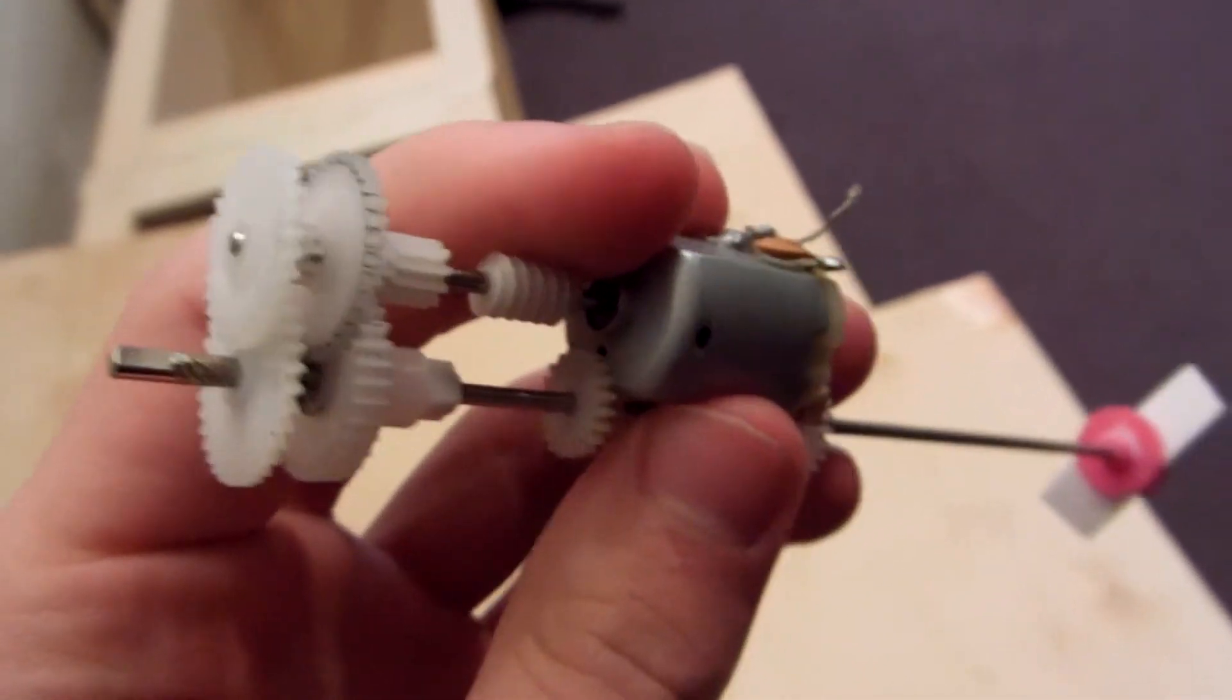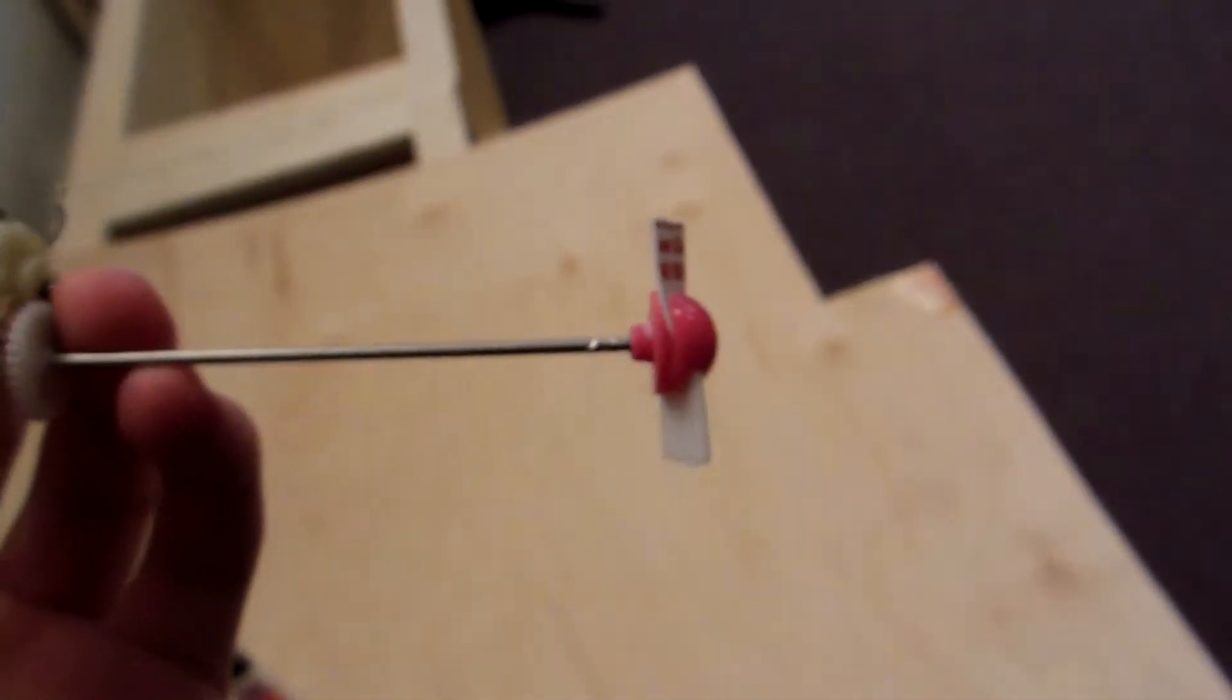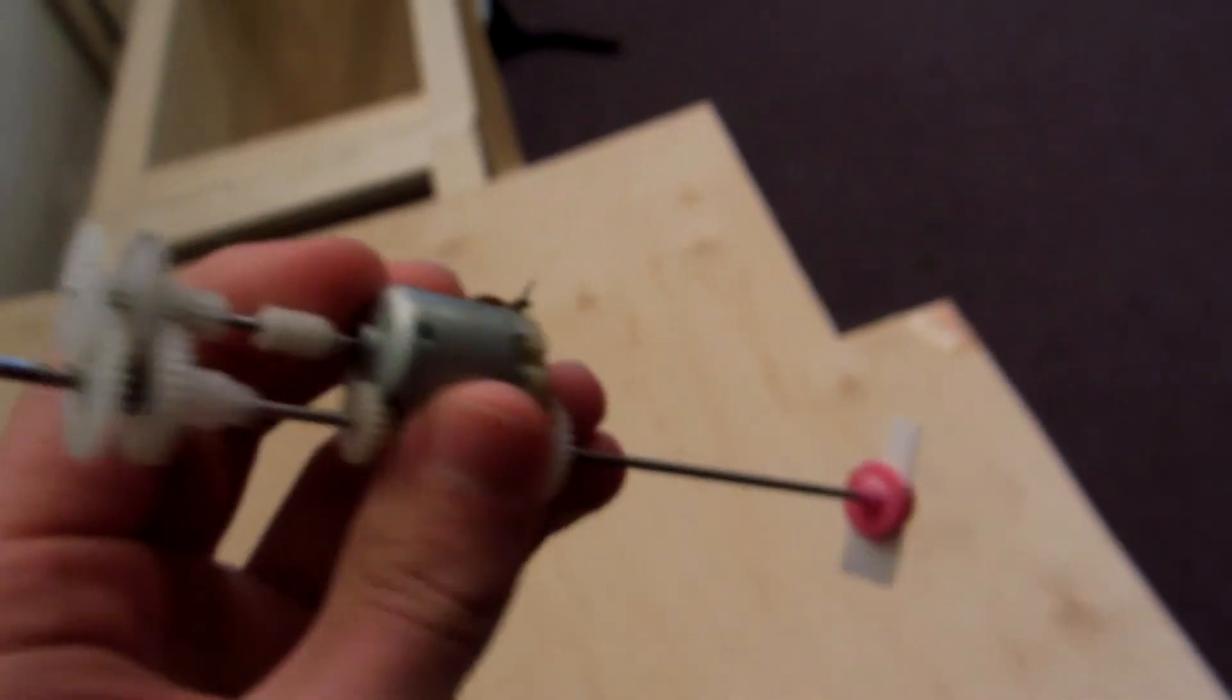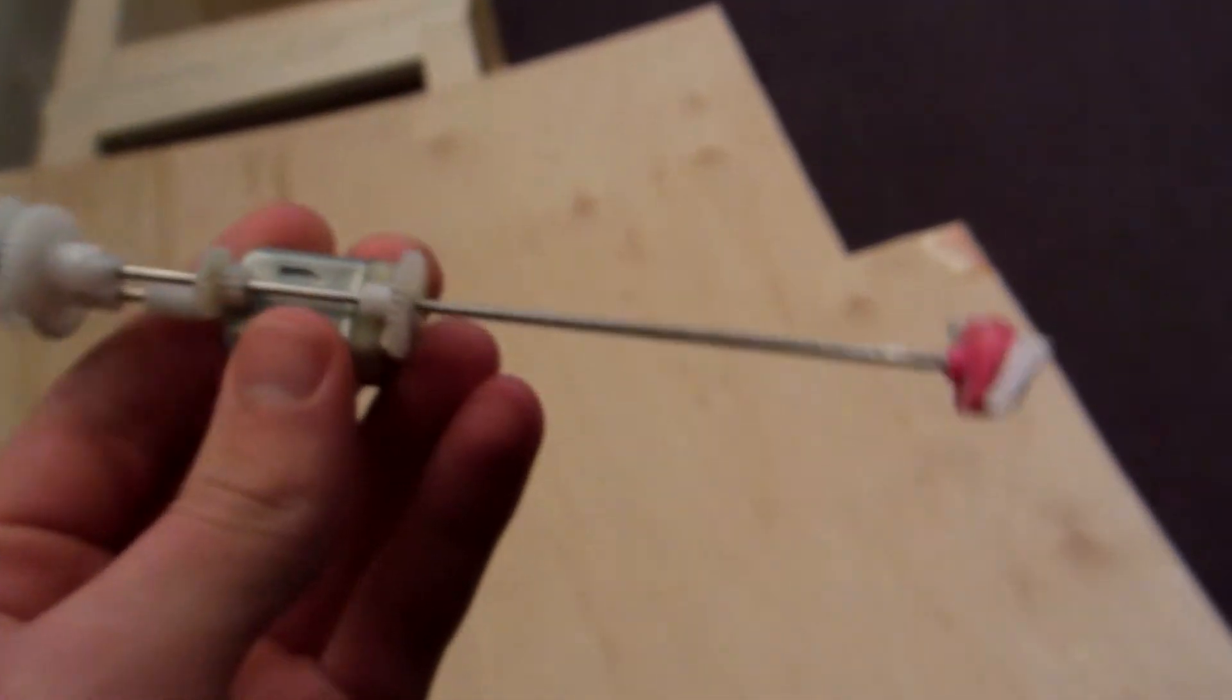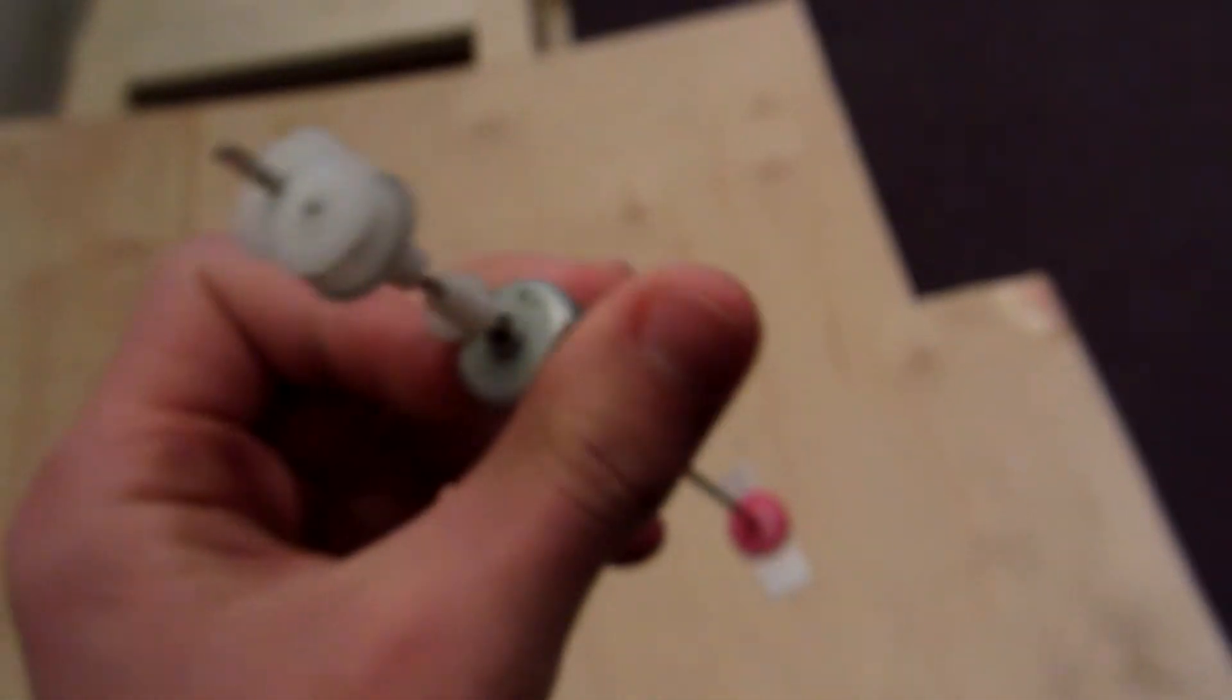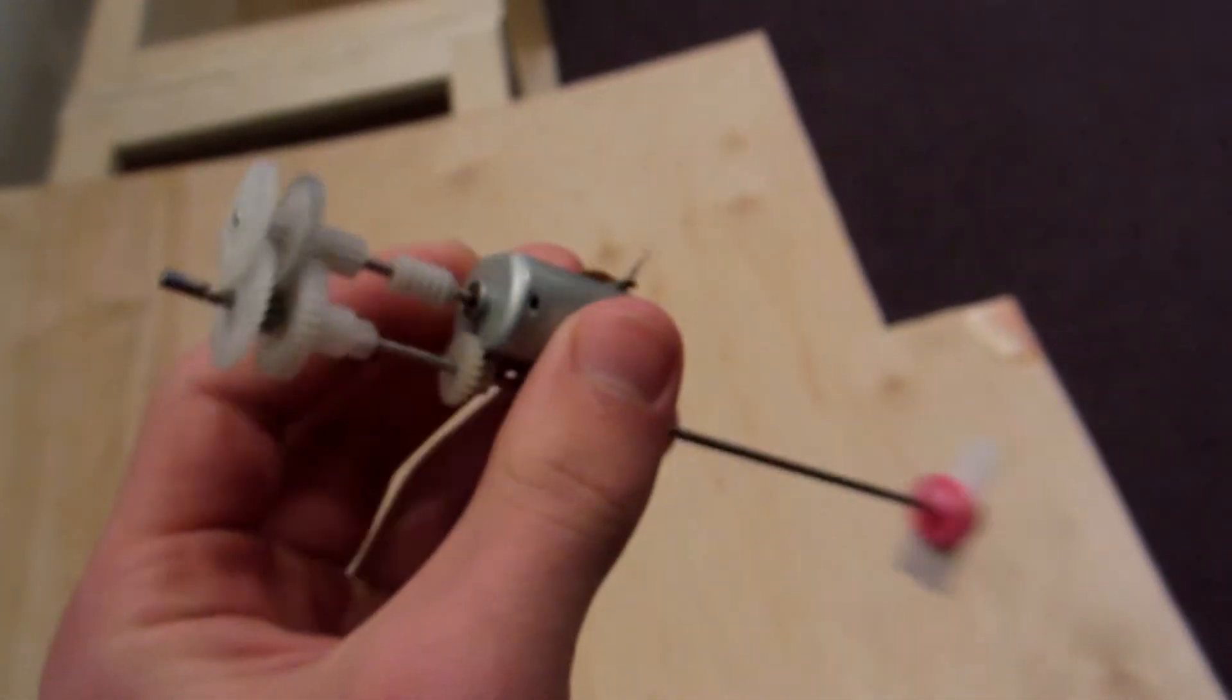Okay, so here's my transmission. You may be wondering why there's a little propeller on the end of there. Well, the reason being I'm just using that so in this video you can see the different speeds.